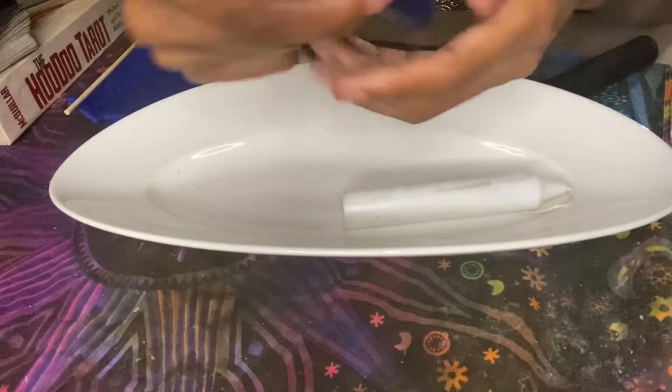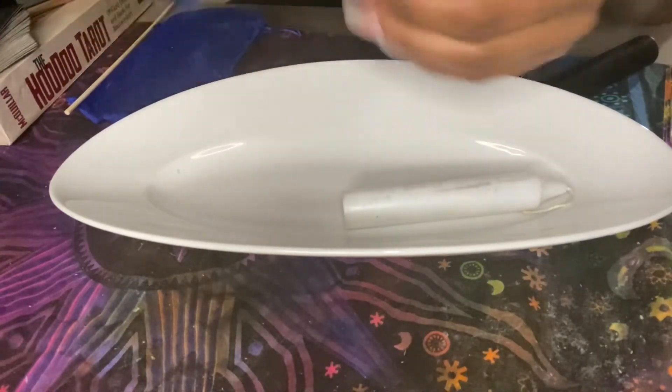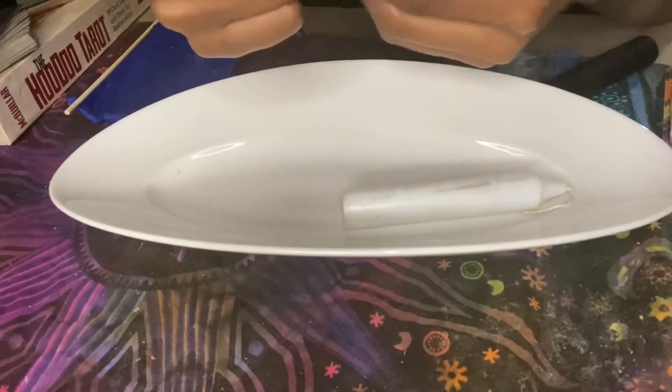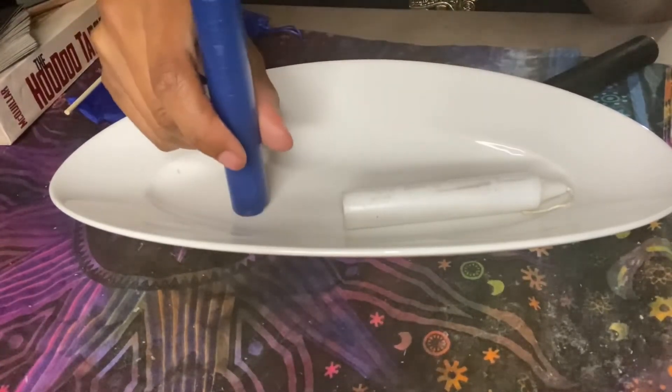And then you want to flip it over and rub it from the bottom clockwise into the middle. So when we rub it on the top, we're going to stop at the middle. And when we turn it over, we're going to rub it from the bottom and stop at the middle.